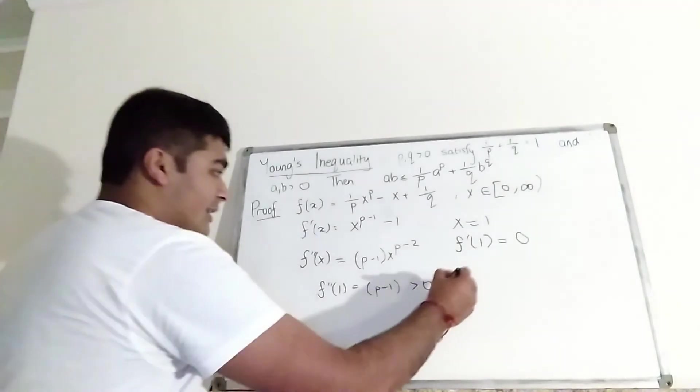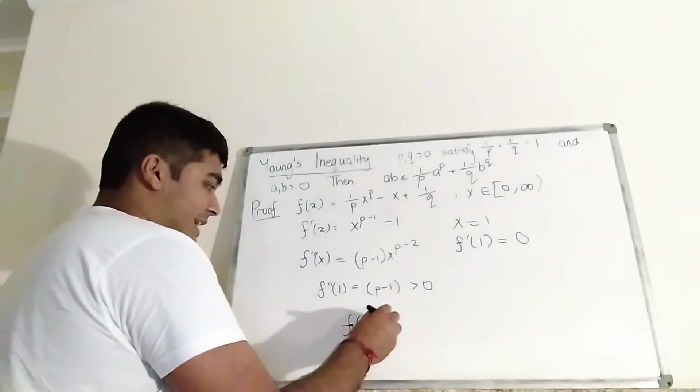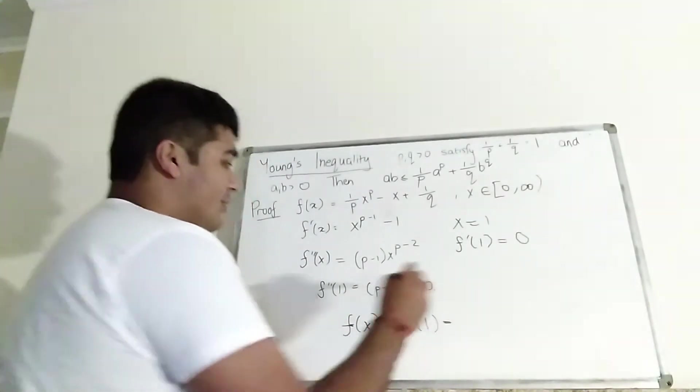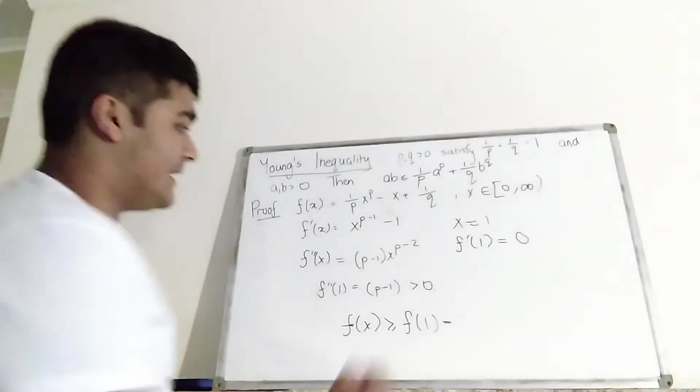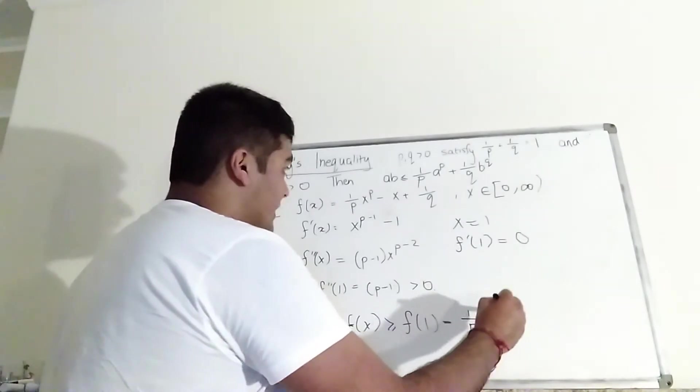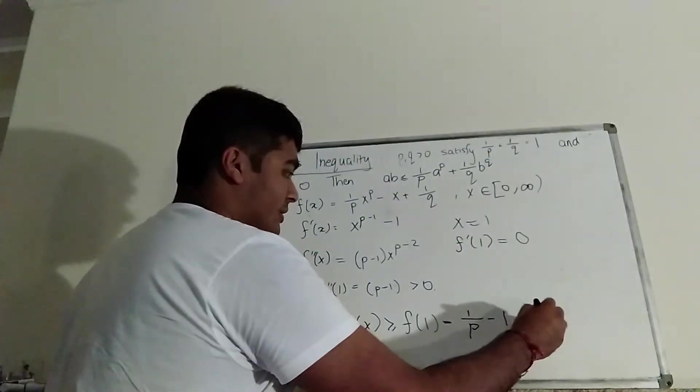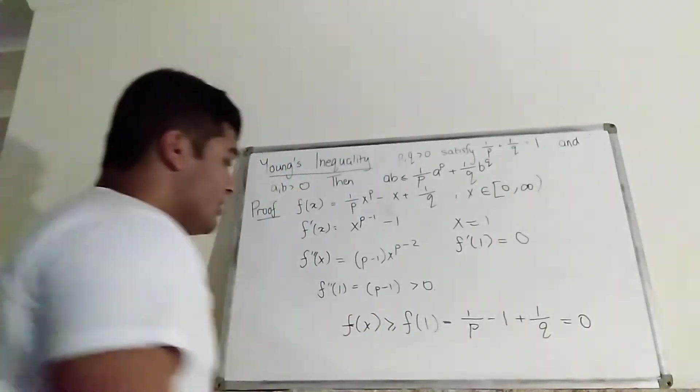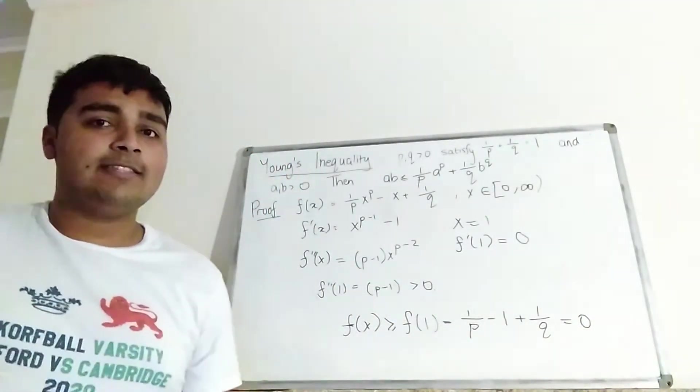Okay, so we can conclude that f of x is weakly greater than or equal to f of 1. Well, what is f of 1? Let's just plug it into this thing here. It's 1 over P minus 1 plus 1 over Q. But remember, 1 over P plus 1 over Q equals 1, so this thing here is just 0. So in other words, f is a non-negative function.